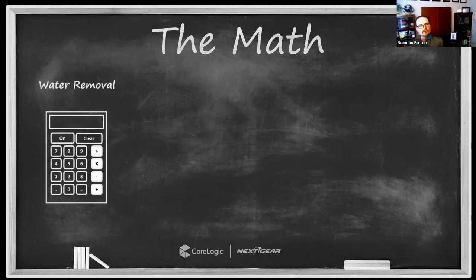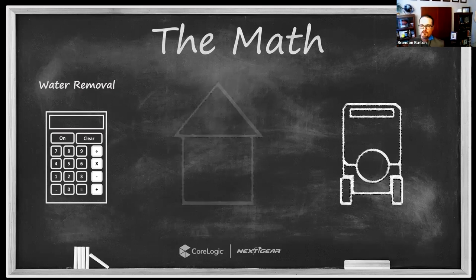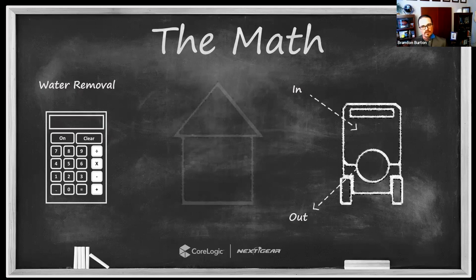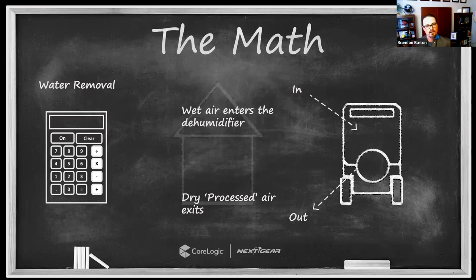Water removal: to understand how much water is being removed from the space, here's the concept. We have air entering the dehumidifier — that's the moist air in the property — and air exiting the dehumidifier, which we call processed air. That processed air is typically warm and dry. To understand water removal, we need to understand the difference in the amount of water between these two — something called grain depression, which is the difference in grains per pound between the air entering and the air exiting the dehumidifier.